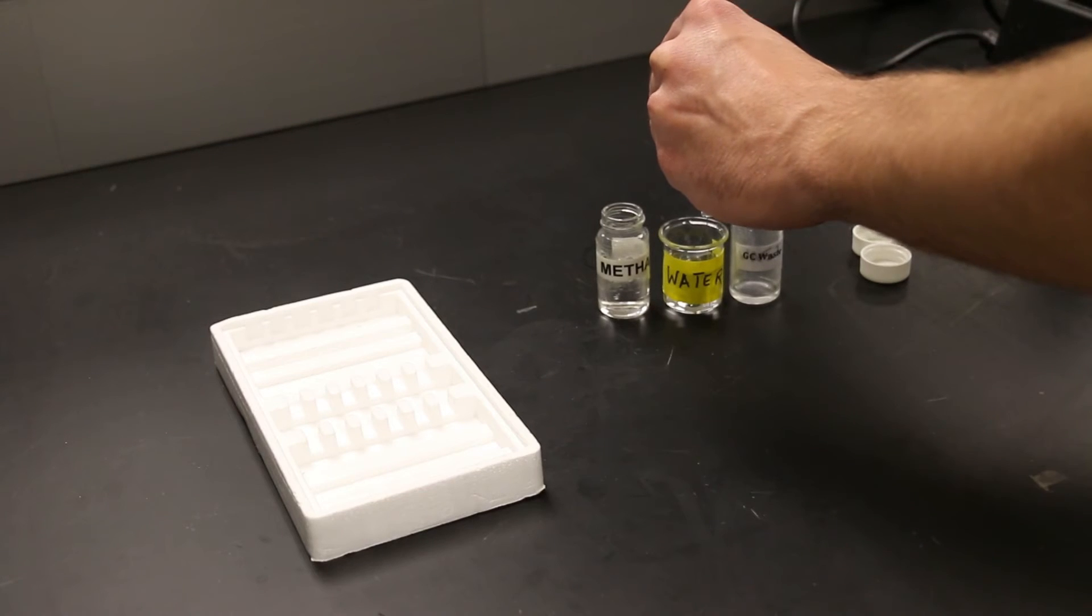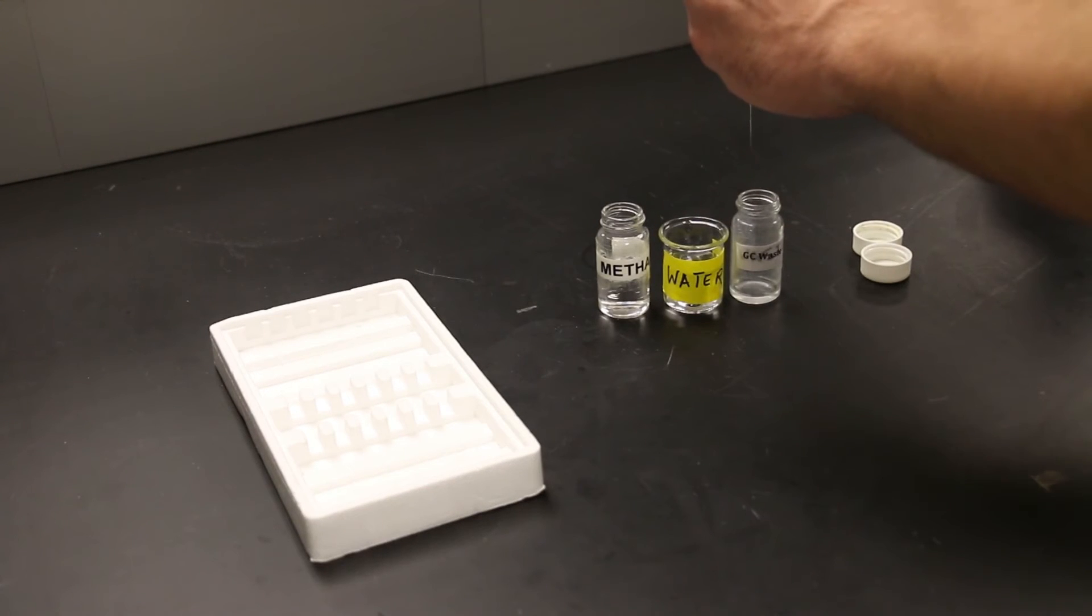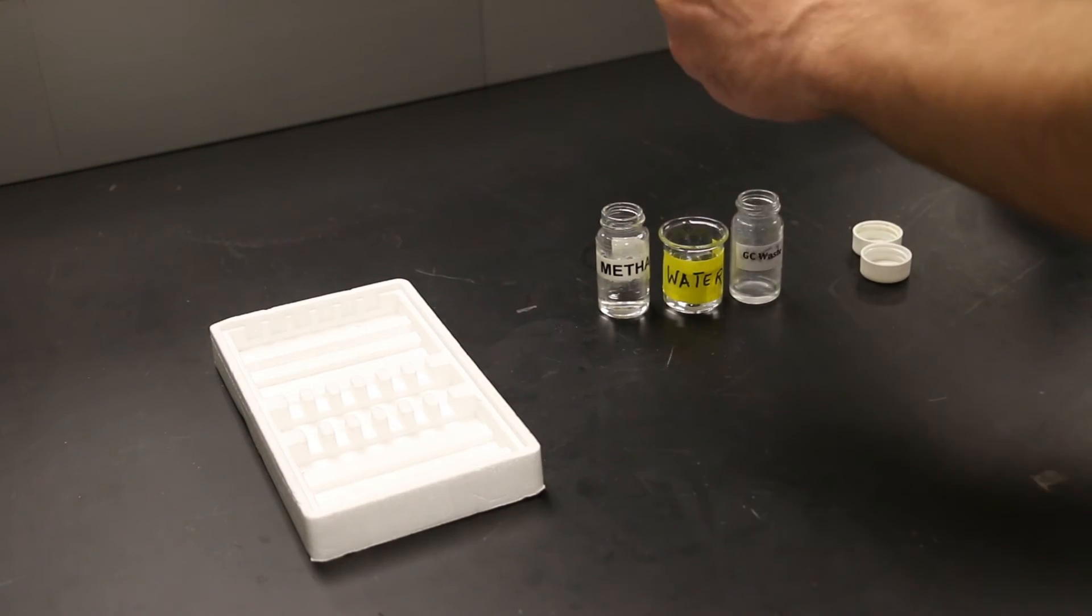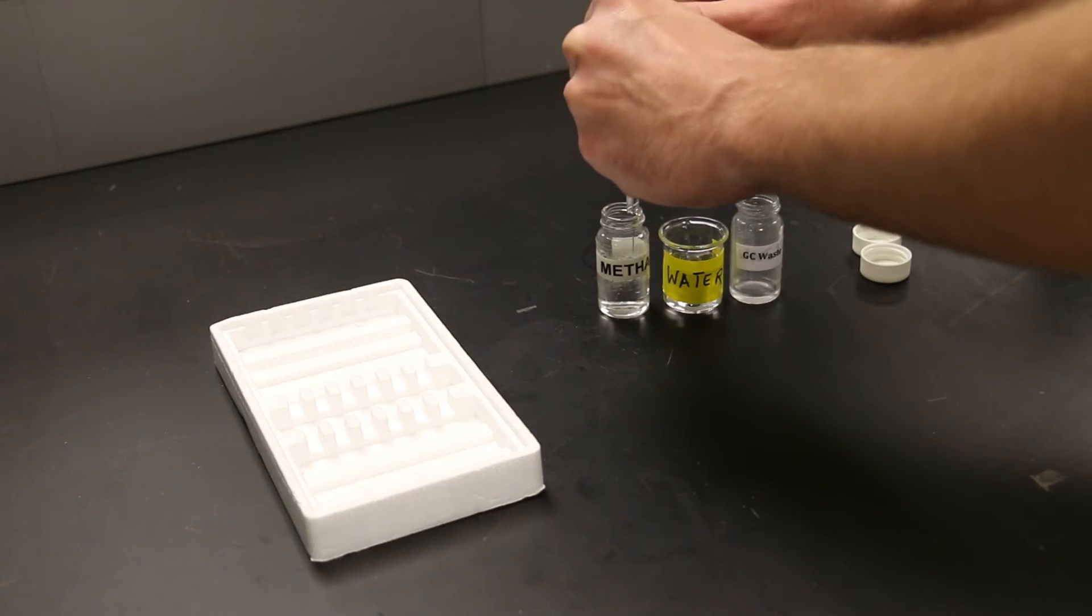Clean the syringe just like you rinse the syringe. Pull up seven to nine microliters of water, expel that rinse into the waste container, and then follow that water rinse with two rinses of methanol.